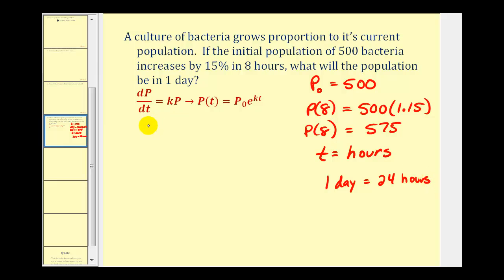Using the exponential function P of t equals P sub zero times e raised to the power of kt, we know after eight hours the population is 575. We know the initial population P sub zero is 500 times e raised to the power of k, which we don't know, and t is the time, which to increase to 575 is eight hours. So our exponent is 8k.